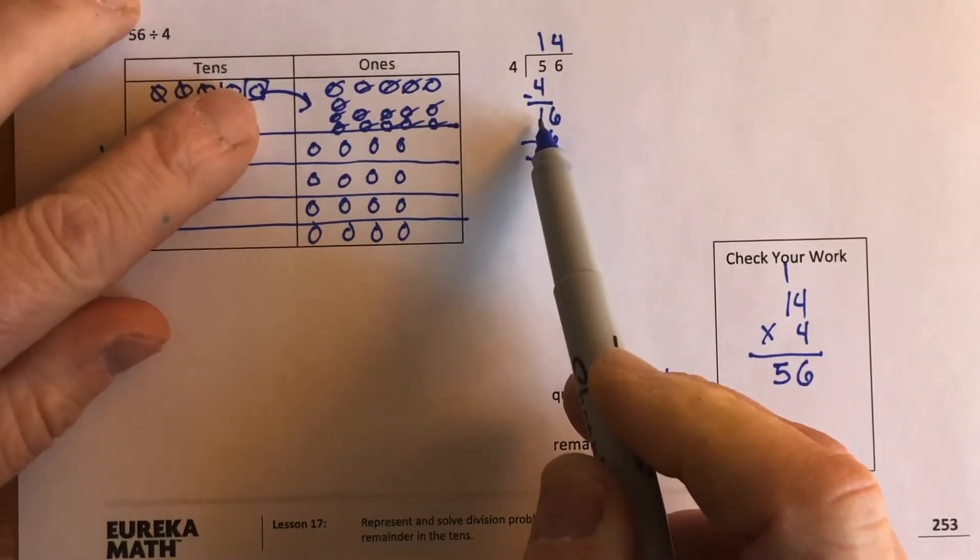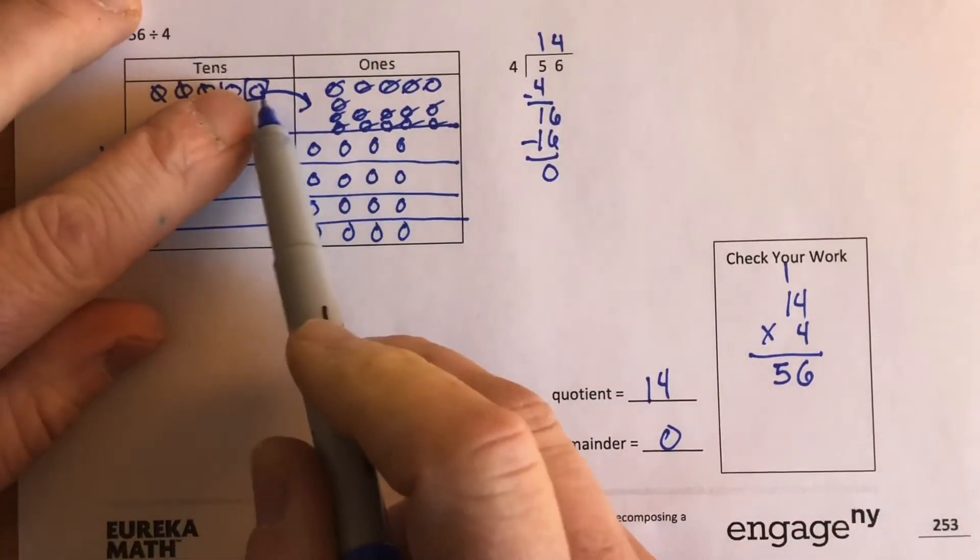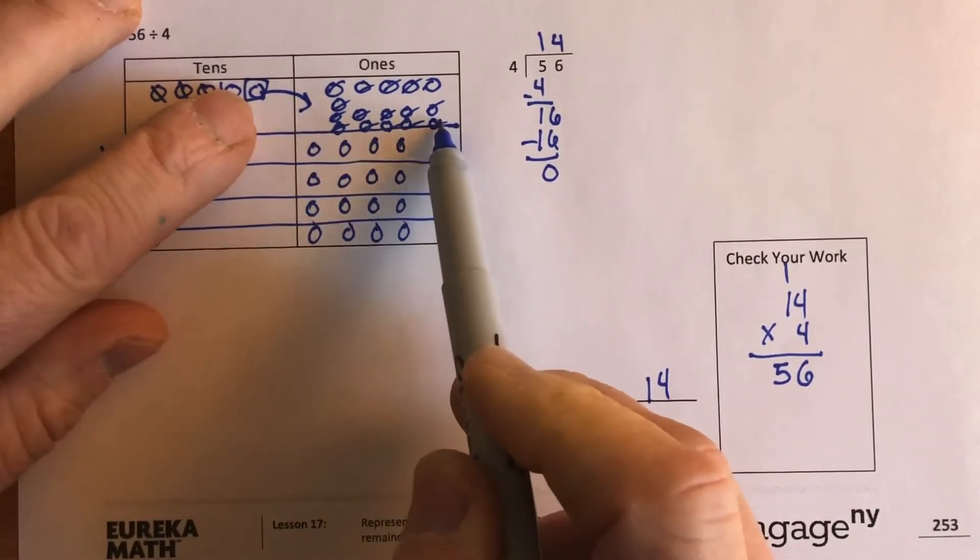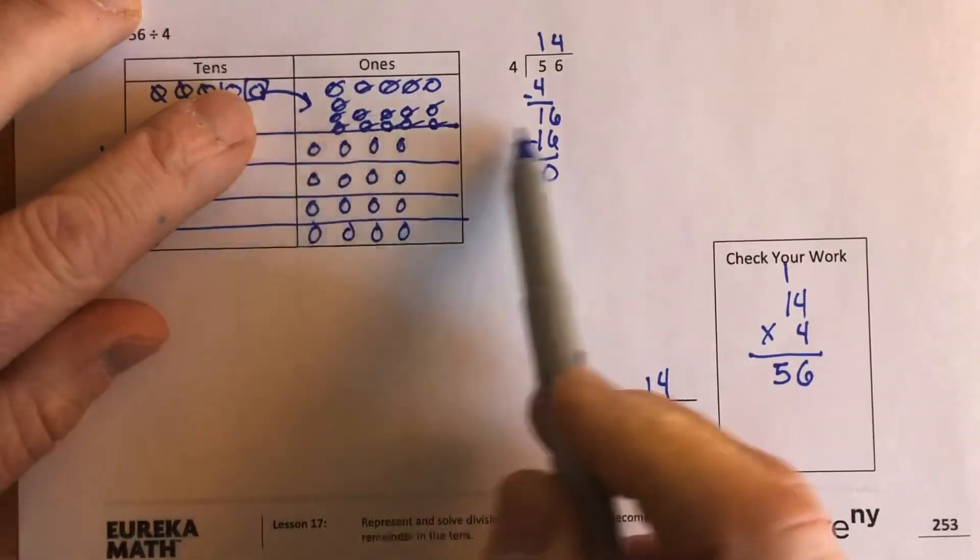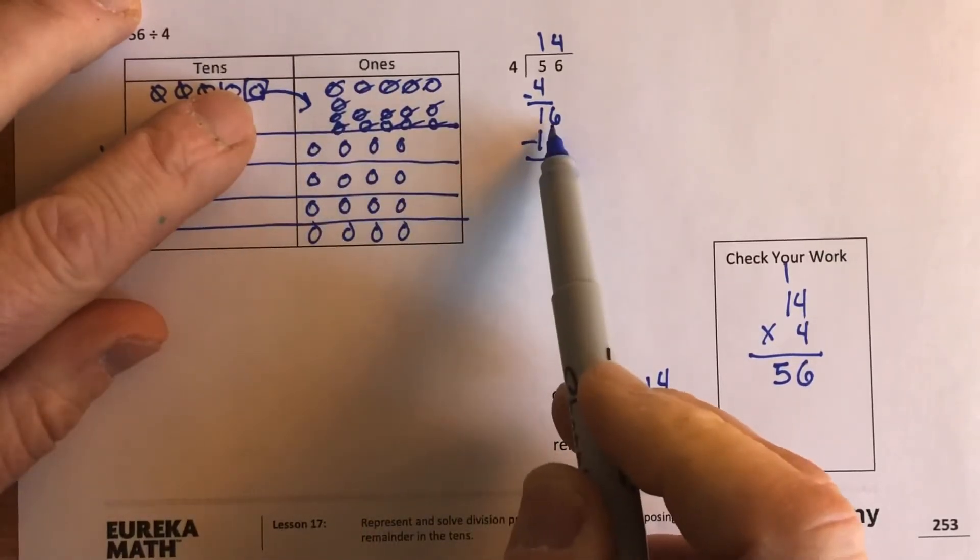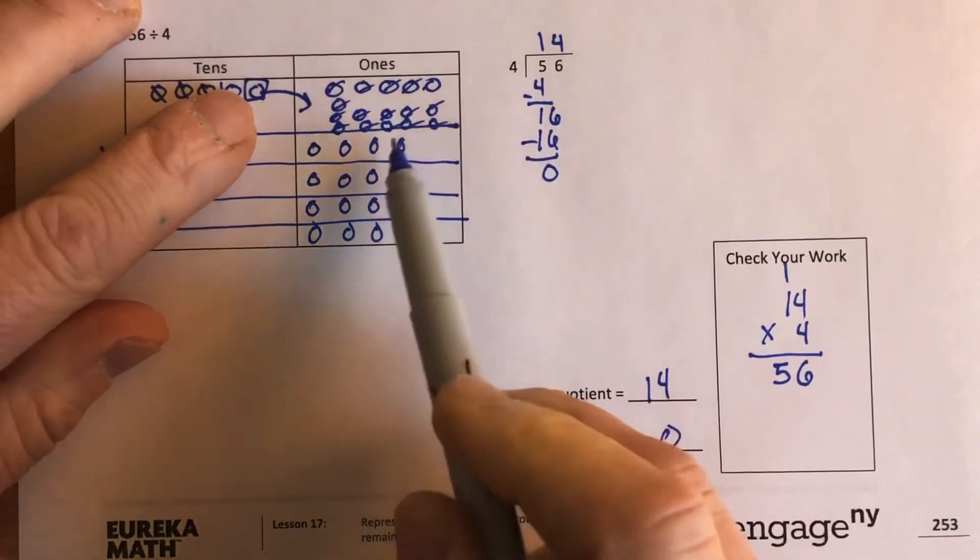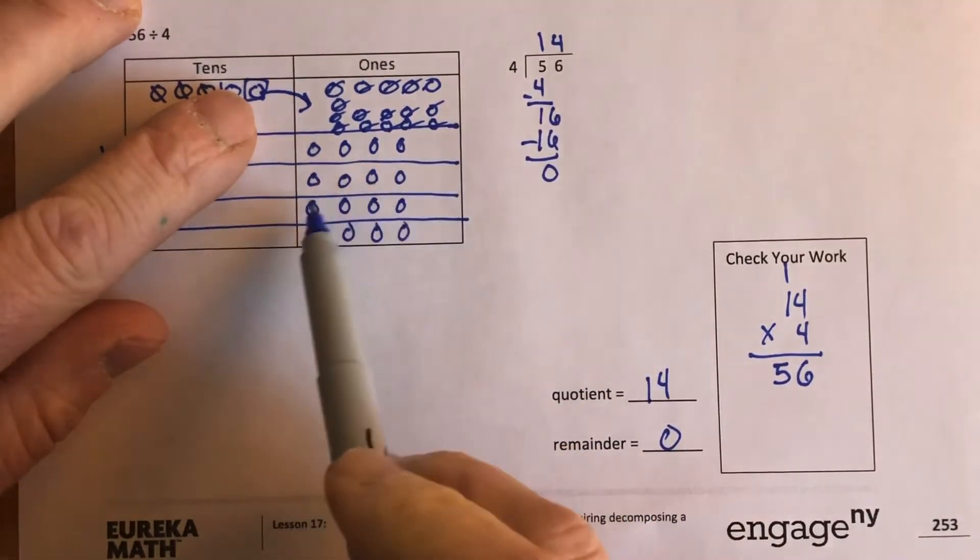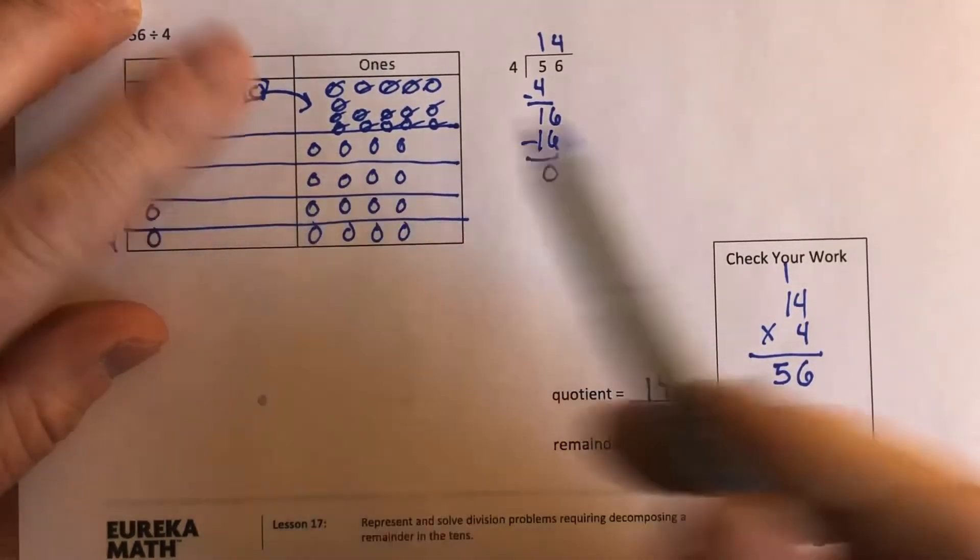I had to decompose that ten down into ten ones. All right, that left me with 16 in this box. Just like here we see 16. And then I did split that, four fits into 16 four times. So I split that 16 up four times and I got four in each box. That's where that four comes from.